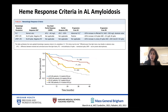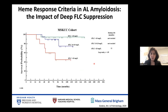Hematologic response criteria in AL amyloidosis are defined as follows: complete remission means a normal free light chain ratio and negative immunofixation in both urine and serum. A very good partial remission in AL amyloid is different from myeloma — the emphasis is on the circulating free light chain, specifically on the difference between involved and uninvolved free light chain being less than 40 mg/L. The survival curve shows clearly that the better the hematologic remission, the longer the survival.